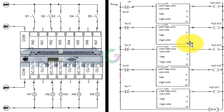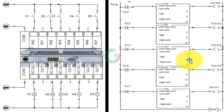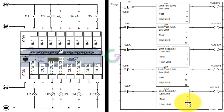इसी तरह हमने 3, 5 और 7 के साथ भी एक-एक Limit Test Compare Block connect किया है। Input 3 से जो Limit Test Block connect है उसकी test value है 7। Input 5 से जो Limit Test Block connect है उसकी test value है 10। Input 7 से जो Limit Test Block connect है उसकी test value है 11।